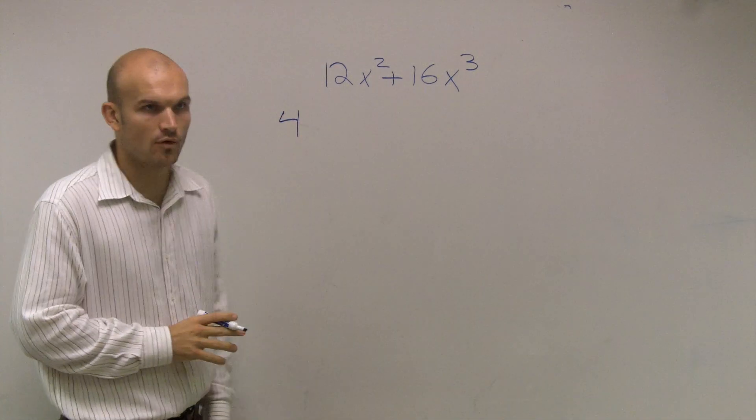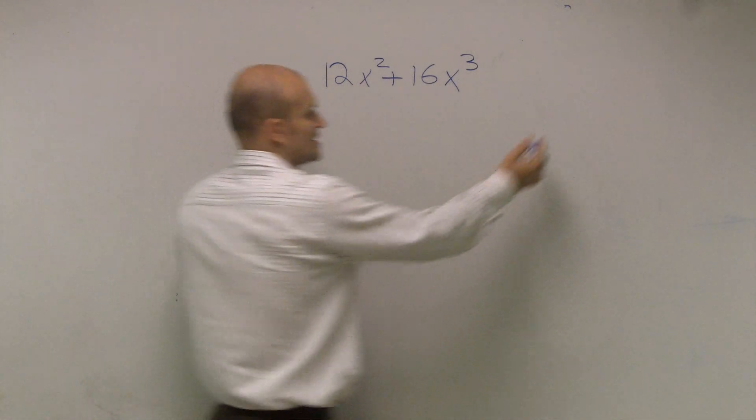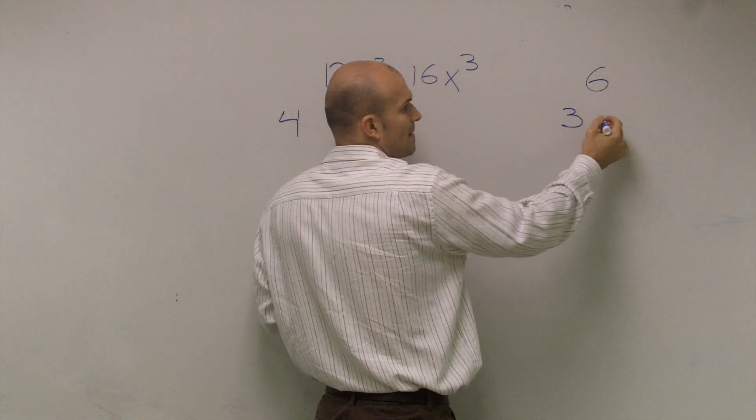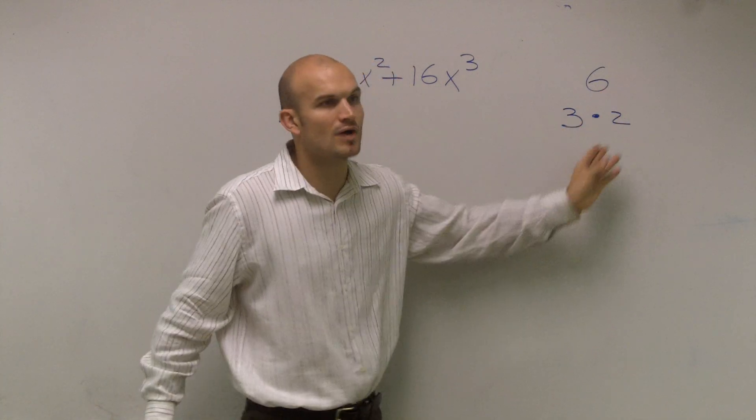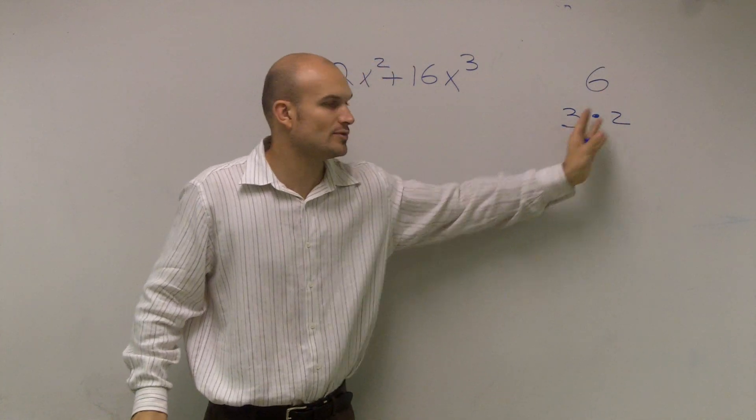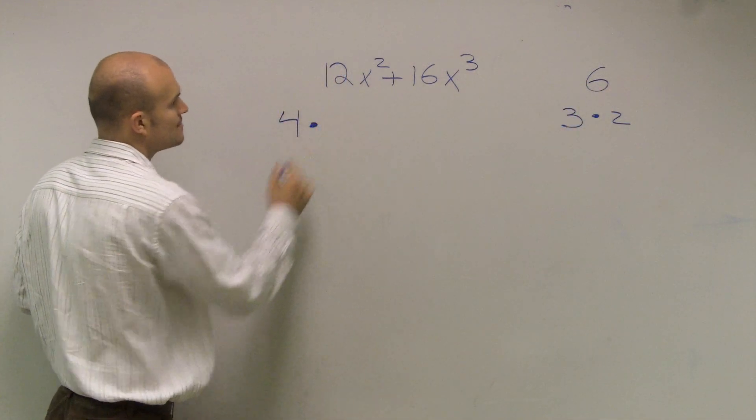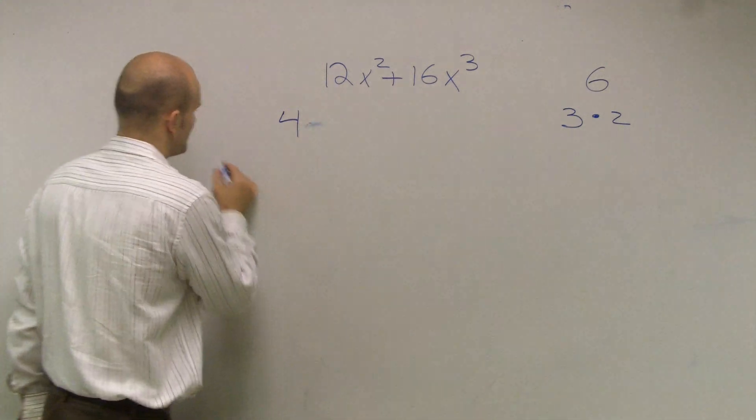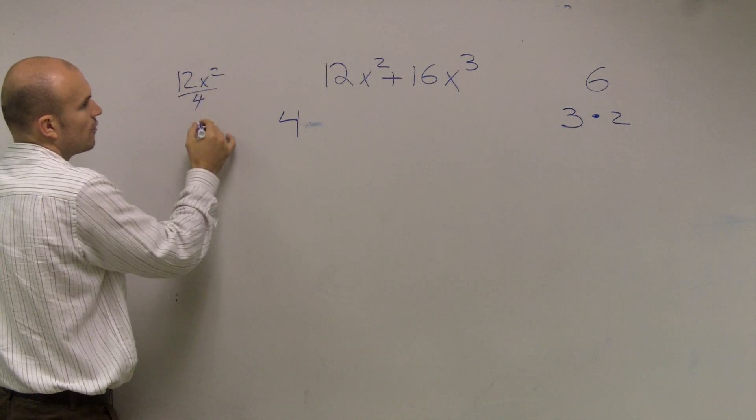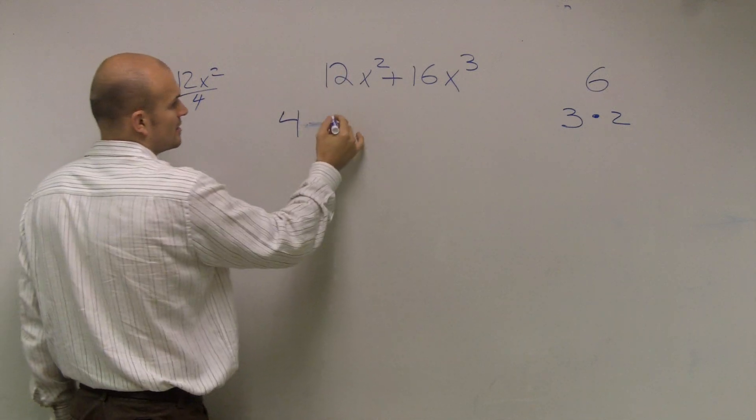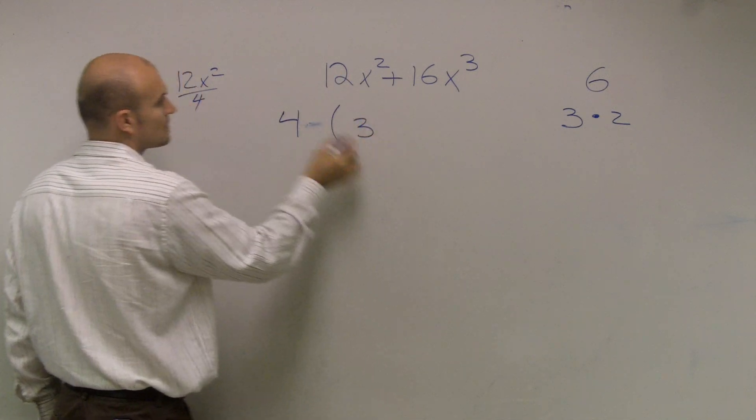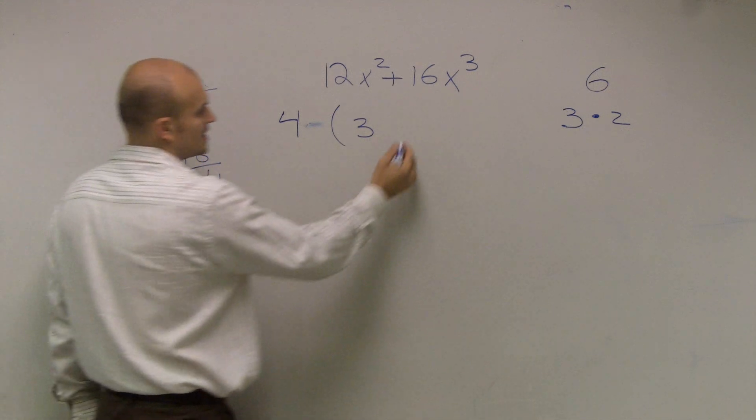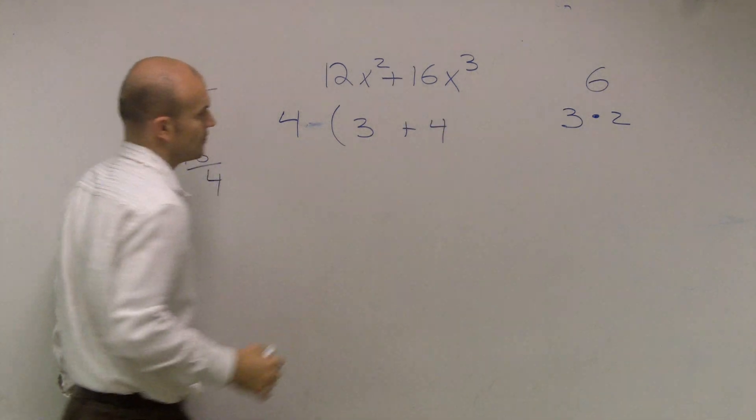Now remember, when you factor out a 4, what we're doing is like we're dividing out the 4. Just like if I said 6 and a factor of 6 is 3, well, 6 divided by 3 is going to leave you 2. So you write it as a product of the two factors. So 3 times 2 equals 6. So this is going to be 4 times, well, what's the result when you divide by 4? 12x² divided by 4 is going to give you 3. And then 16 divided by 4 is going to leave you with a positive 4.